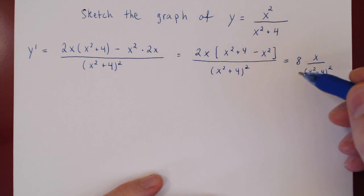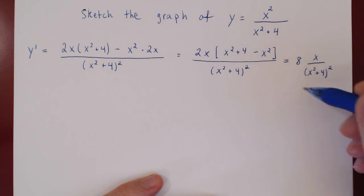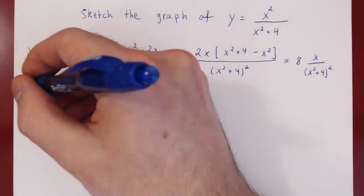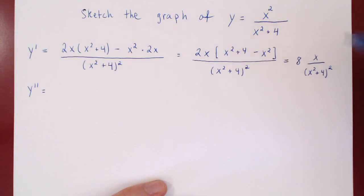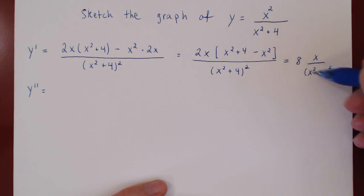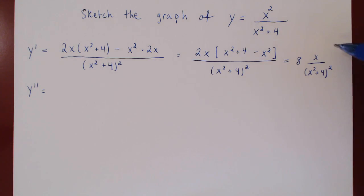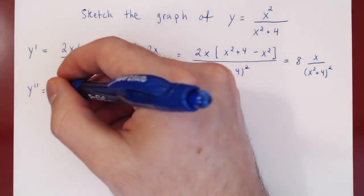So we now have our first derivative. The reason we leave the 8 as a constant multiple of the entire fraction is that we are going to find the second derivative. 8 is just a constant multiple of the expression, so the derivative of 8 times this function is 8 times the derivative of the function.